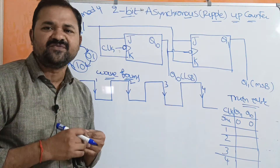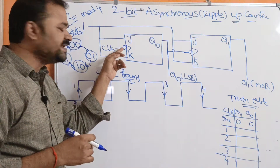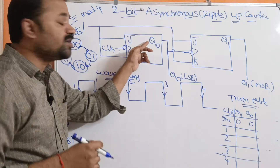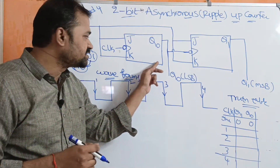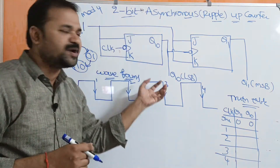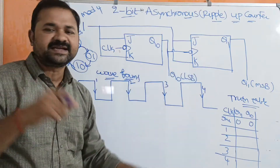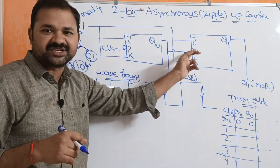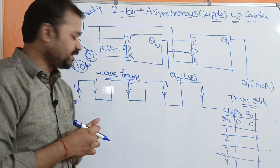If we want to work with a positive edge instead, we can eliminate the bubble and use Q0 complement (Q0 bar) as the clock pulse to the second flip-flop. In that case, we can eliminate the falling edge and use the rising edge instead.